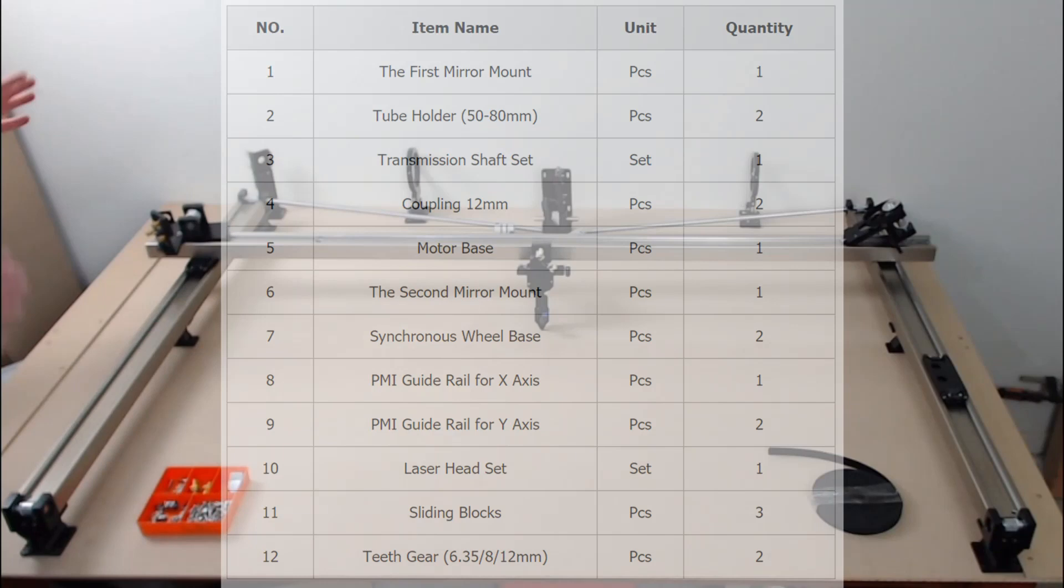Over here we have the first mirror mount. The second mirror mount. Okay so what I've done now is just quickly laid it out on the bench here in the rough orientation of where it's all going to be assembled. So let's get it all together.